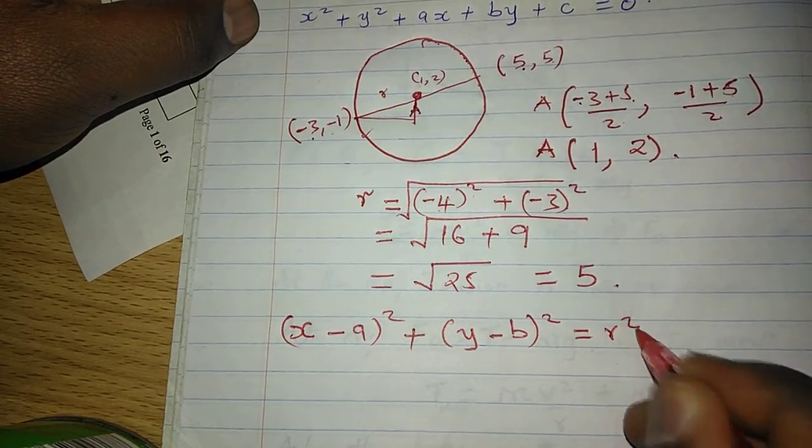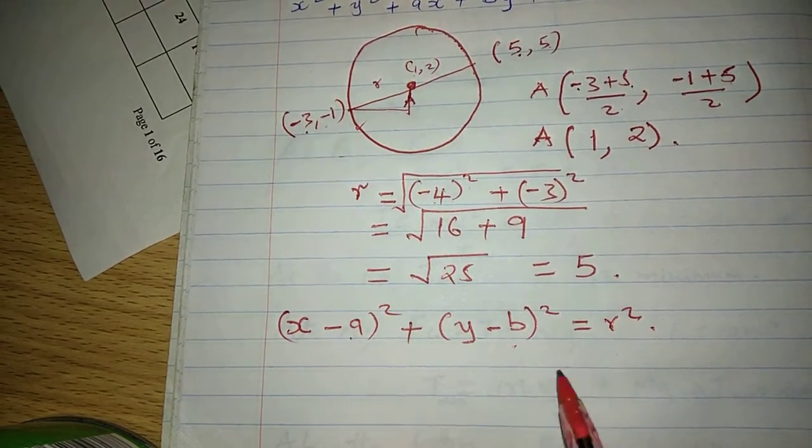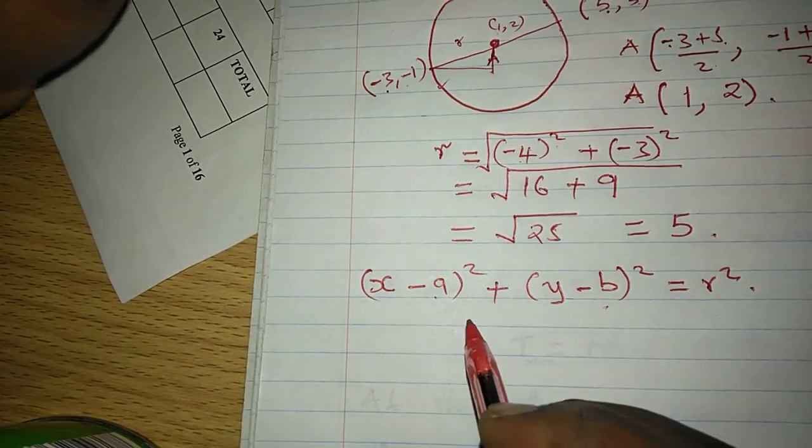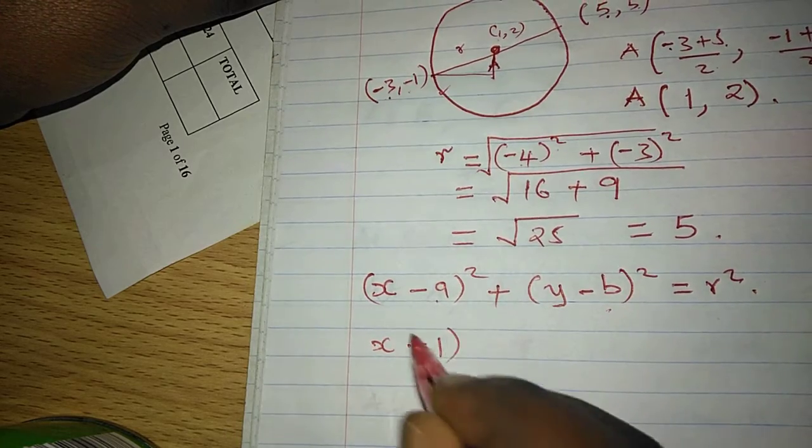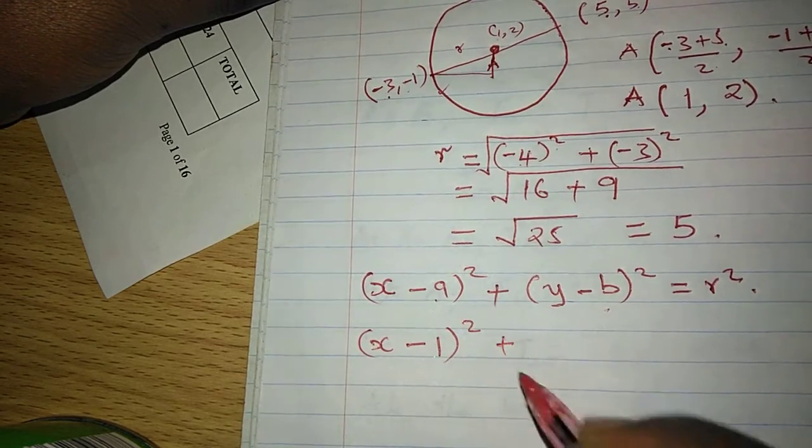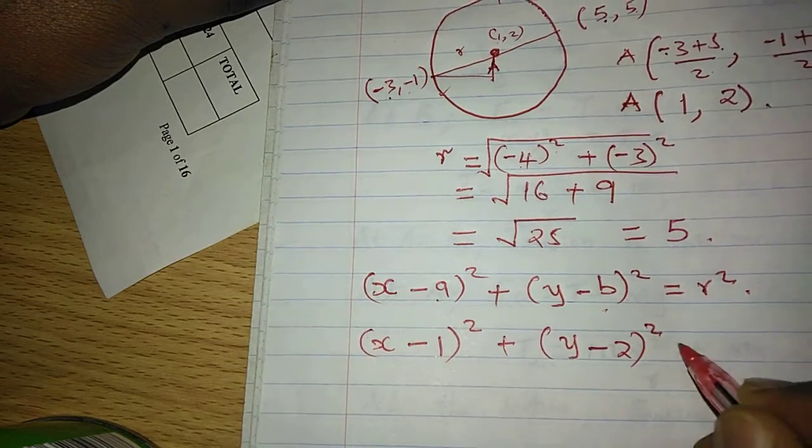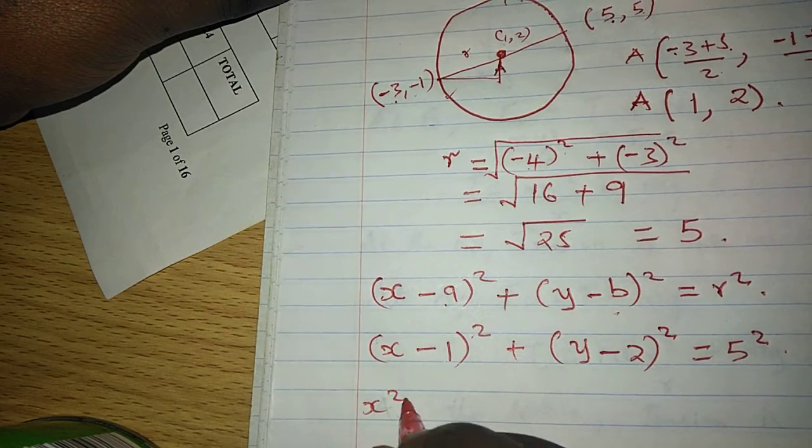equals r² also squared, such that a and b are the coordinates of the center, the x and y coordinates of the center respectively. So we'll take x subtract 1 then squared, plus y subtract 2 squared, equals 5 squared.